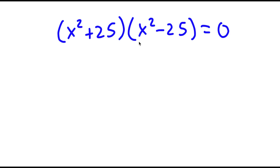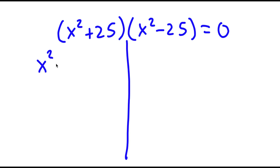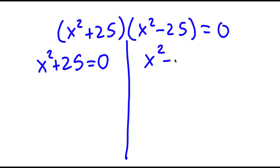So now this is actually going to give me two equations. I have x squared plus 25 is equal to 0, and I have x squared minus 25 is equal to 0.